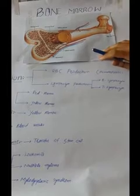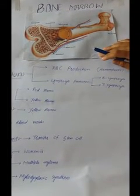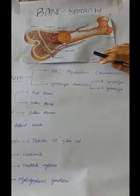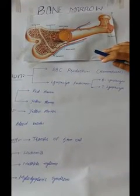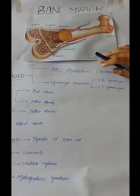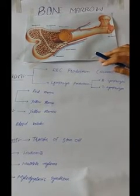In humans and other animals, red blood cells, white blood cells, and platelets are produced in the bone marrow by the process of hematopoiesis. On average, bone marrow constitutes 4% of the total body mass of a human being.